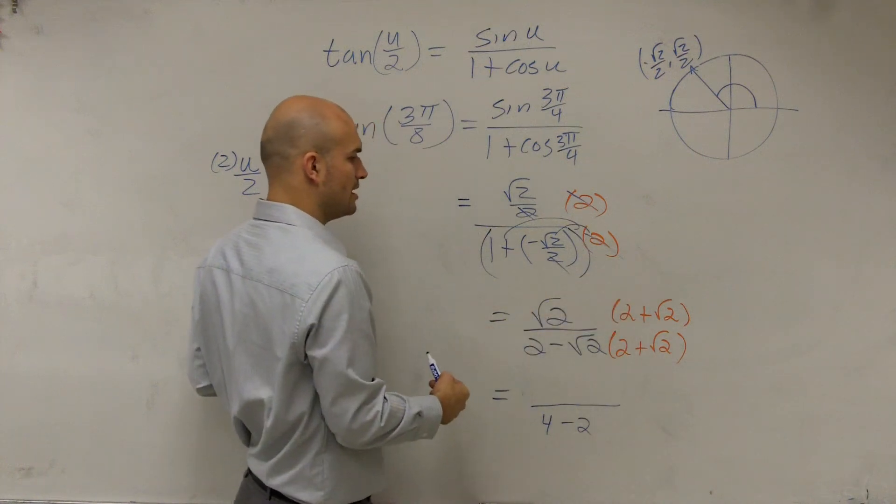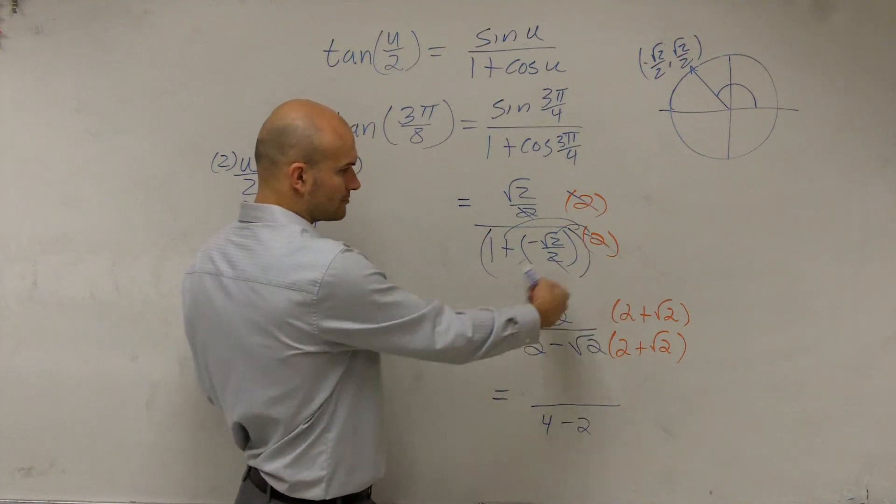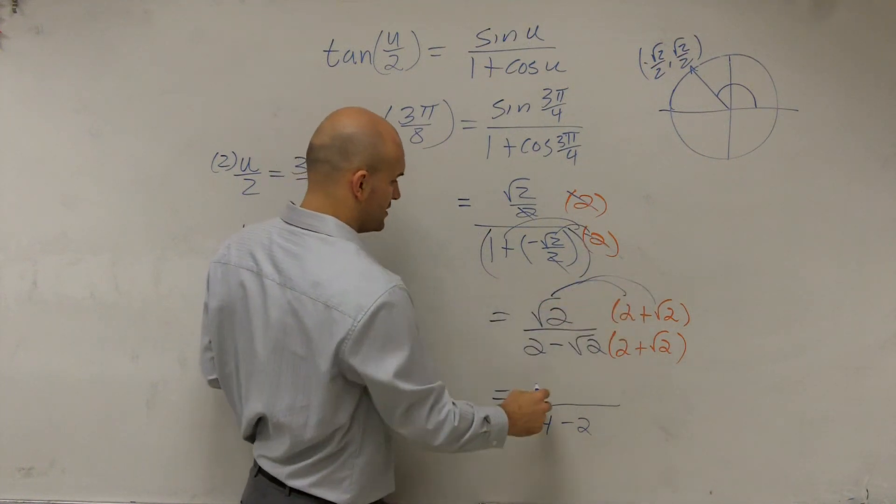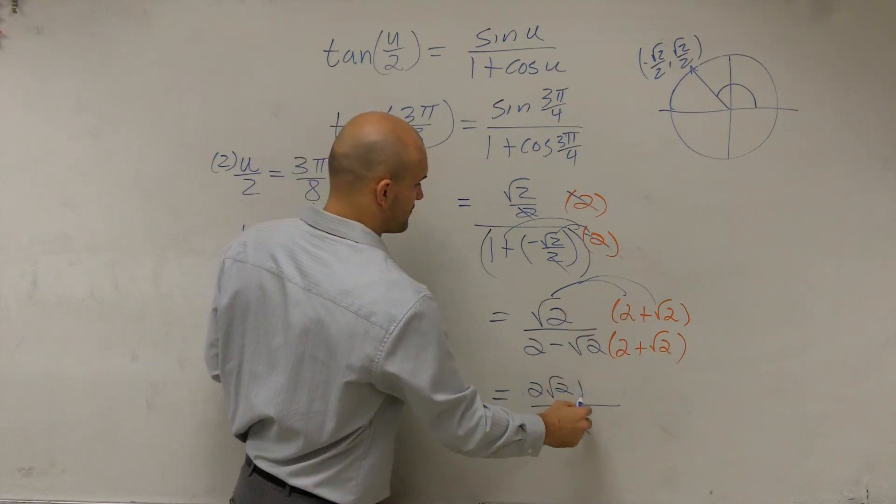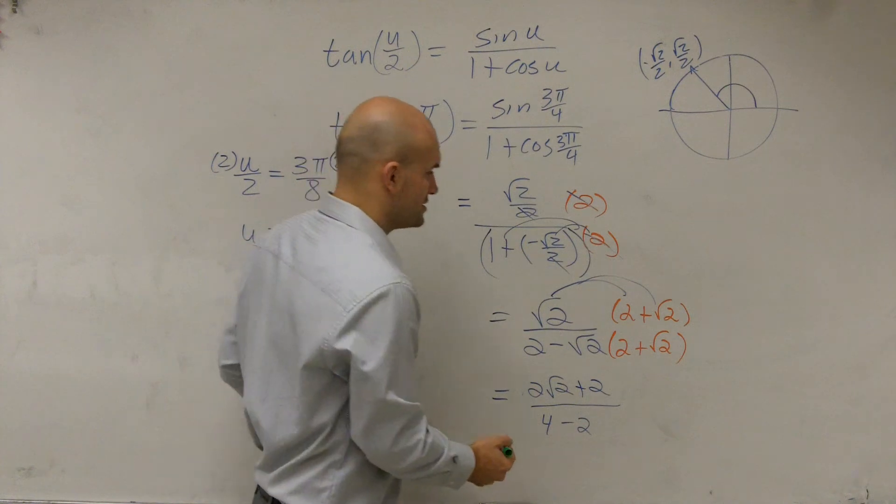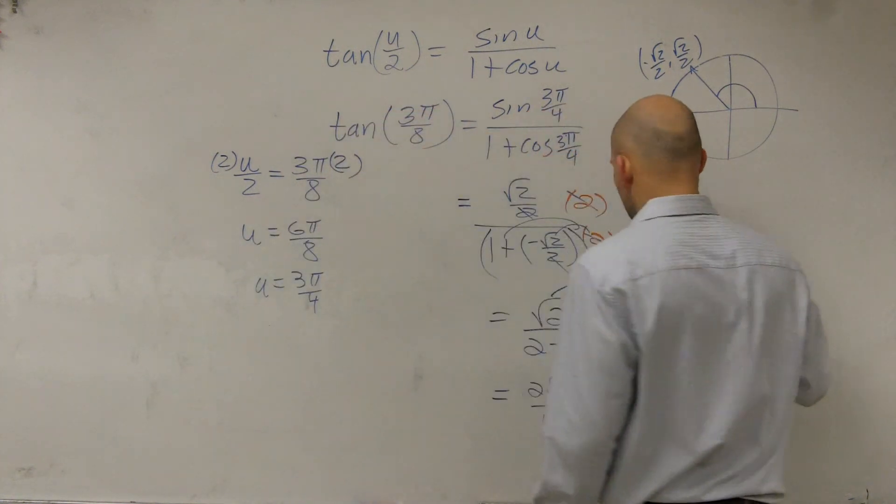And over here, we apply, on top, we apply the distributive property. So we'll have 2 square root of 2 plus 2. Let's go back up to here to simplify this.